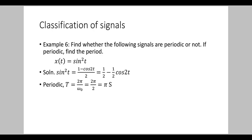Find whether the following signals are periodic or not. If periodic, find the period. x(t) = sin²(t). We use the trigonometric identity: sin²(t) = (1 − cos2t)/2, which we have studied in math. So sin²(t) = 1/2 − (1/2)cos(2t).